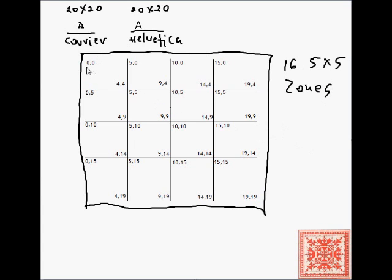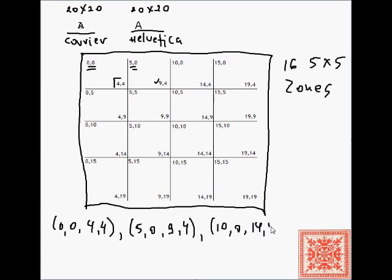So the first one goes from 0, 0 on top left to 4, 4 on bottom right, and then the second zone is from 5, 0 on top left to 9, 4 on bottom right, and so forth. So each zone can be represented as a four tuple of integers. The first two are top left and the second two are bottom right. So 0, 0, 4, 4, the second zone is 5, 0 to 9, 4 in the bottom right, and then the third zone is 10, 0 to 14, 4, and so forth.